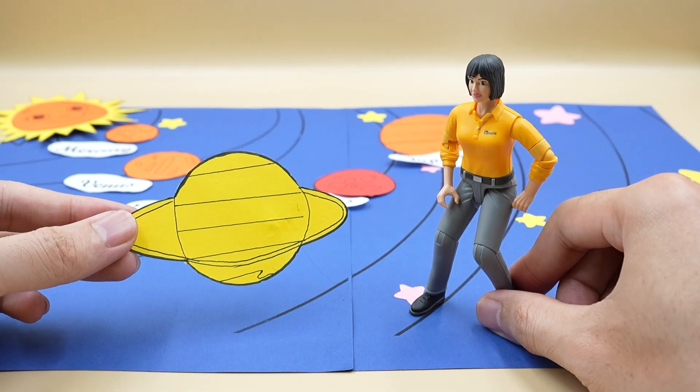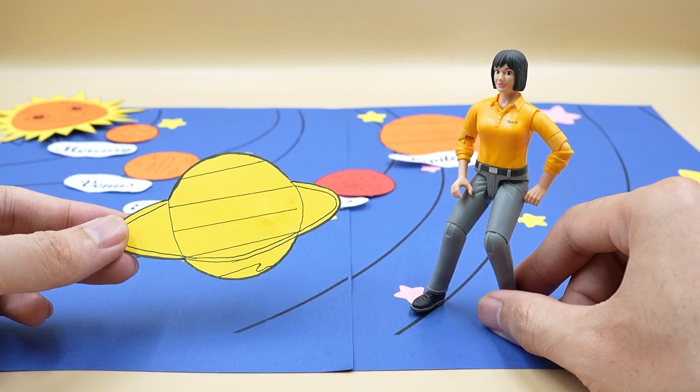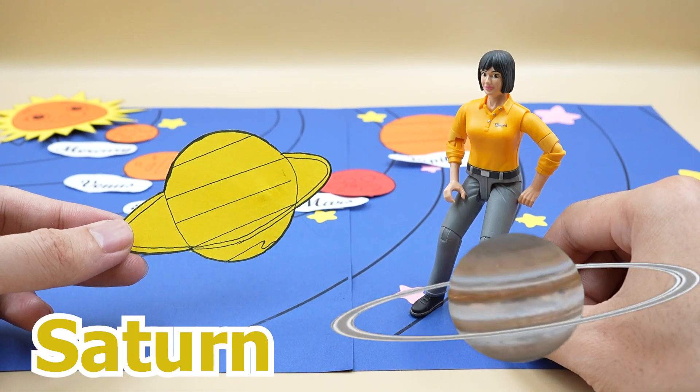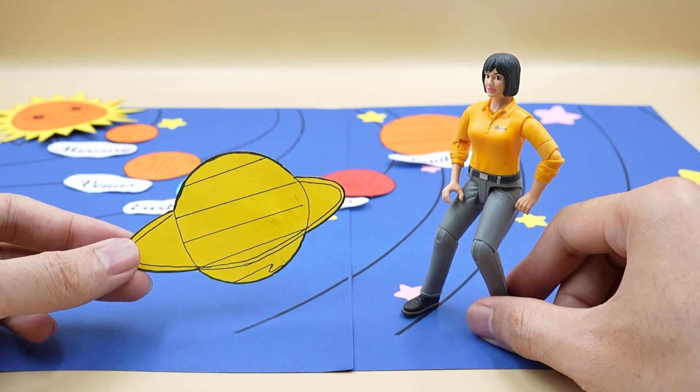Next, which star in the solar system is this? Oh, this is Saturn. This star is yellow. Outside this star there is a circle called the belt. Let me help you give a picture of the solar system.